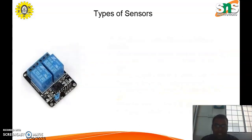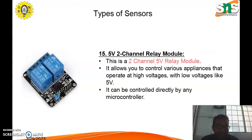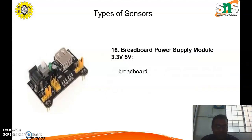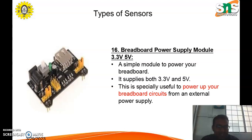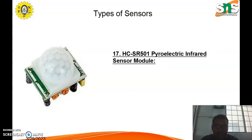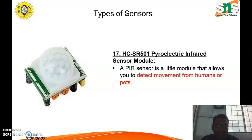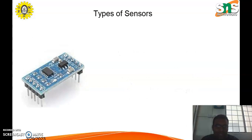The next type is the 5V 2-channel relay module. It allows you to control applications that operate at high voltages using low voltages like 5V, and can be controlled directly by any type of microcontroller. Next is the breadboard power supply module, which supplies 3.3V and 5V to the breadboard, useful for powering breadboard circuits from an external power supply. Next is the pyroelectric infrared sensor module, a PIR sensor that allows you to detect movement from humans or pets, and is easy to integrate with a microcontroller.